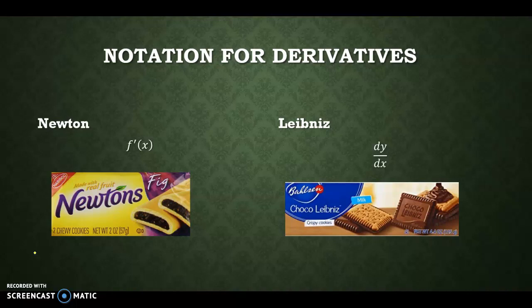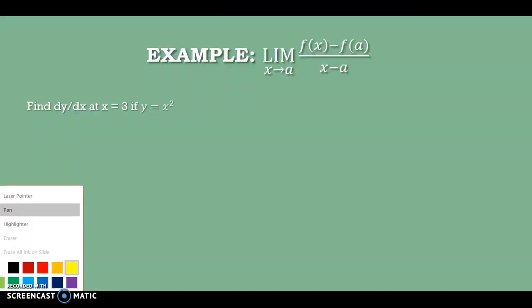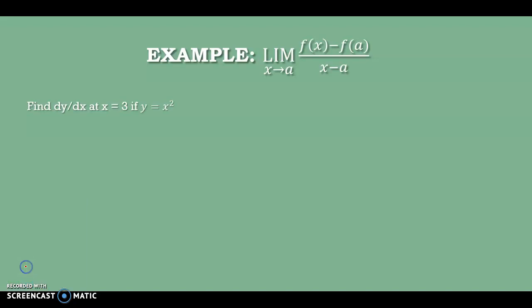There are times when I'll use Leibniz notation for clarity, and times when I use Newton's notation. Here's an example we're going to do together. We're going to use the limit definition and find the derivative at x equals 3.